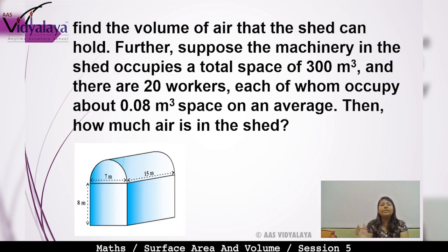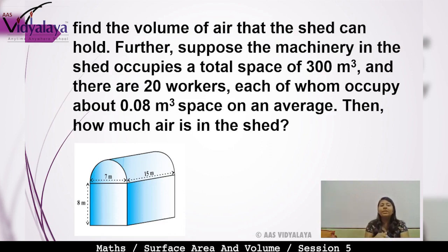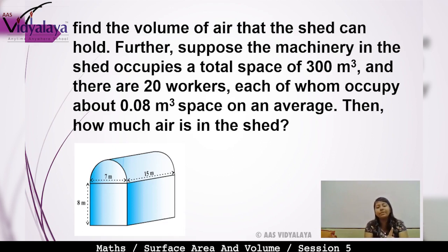Inside the shed there is also machinery. The machinery occupies 300m³ space. Additionally, 20 workers work in that industry, and each worker uses 0.08m³ space on average. After including machinery and workers, how much air remains in the shed?